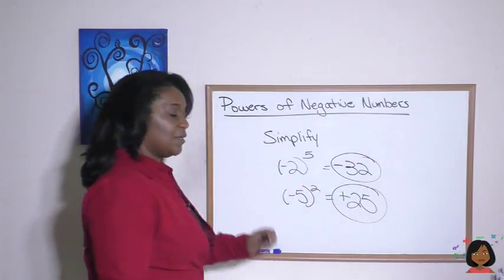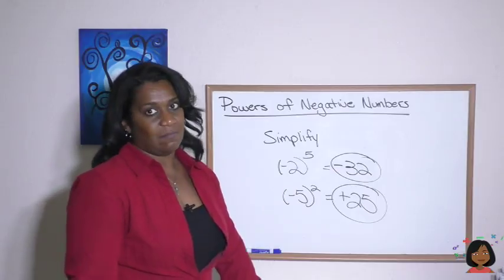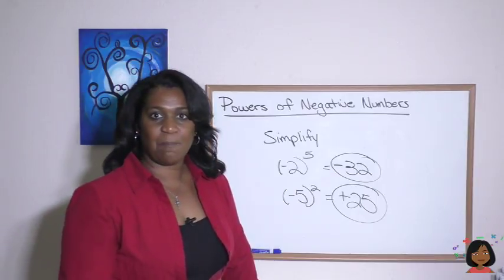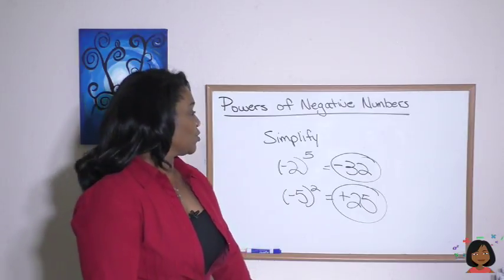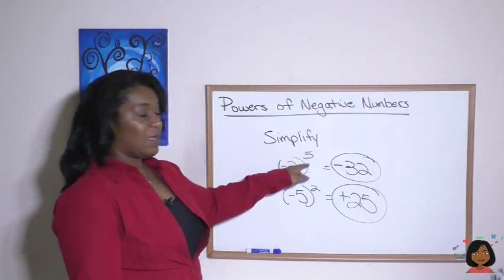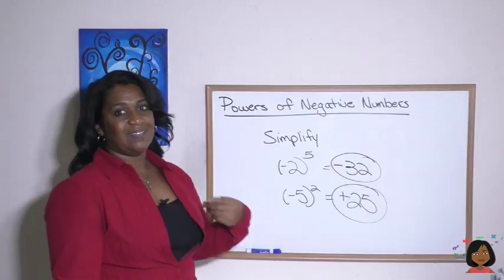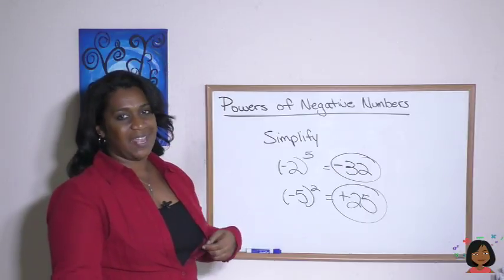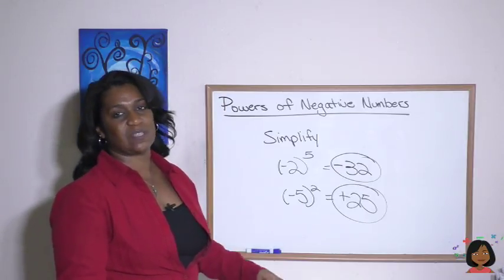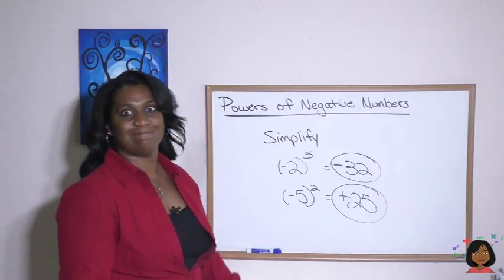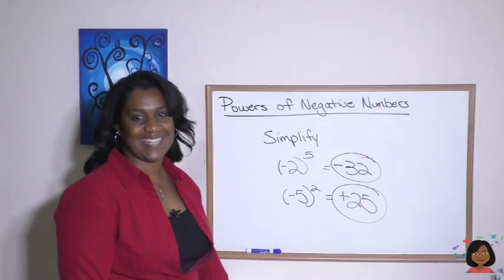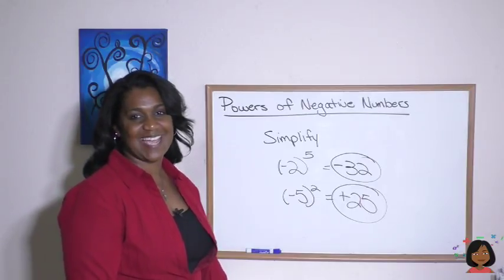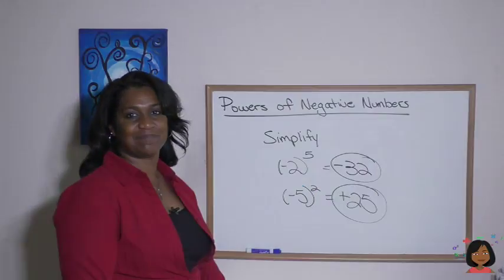It's really that simple! Just remember: odd exponent equals negative, even exponent equals positive. That's it for me today — it's Nicole the Math Lady. I'll see you next time, bye bye!